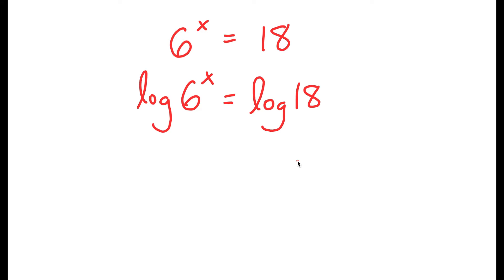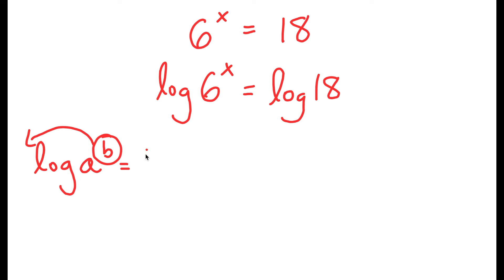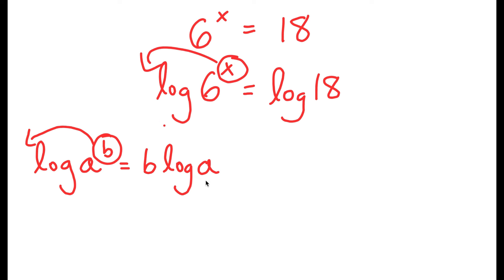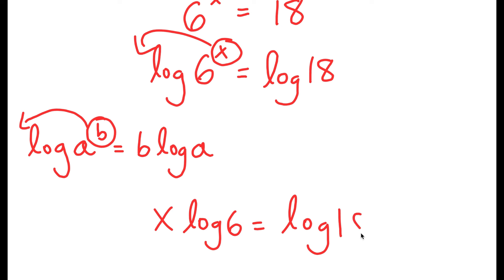Now from here, an important property of logarithms is that if I have something in the form log a to the power of b, I can move this exponent b to the front, so I get b times log a. In this case, I have log 6 to the power of x, and I can move x to the front. So I get x times log 6 is equal to log 18.